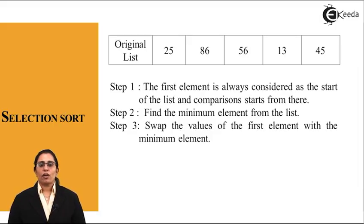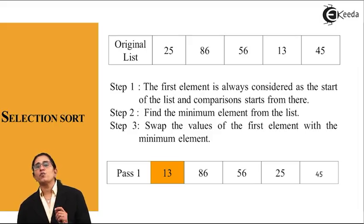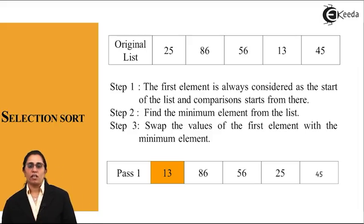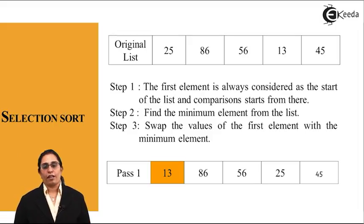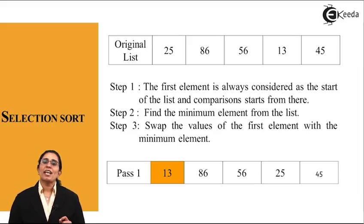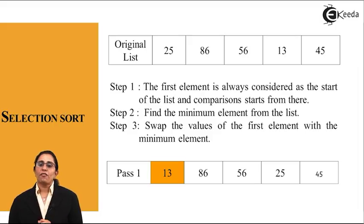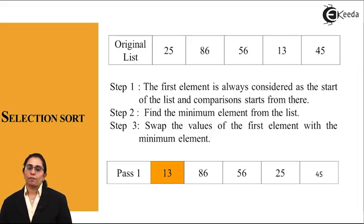When we traverse, 13 is the minimum element in the list. As soon as we find the minimum element, we swap their positions. We swap the positions of 13 and 25. After pass 1 of selection sort, my list becomes 13, 86, 56, 25 and 45.